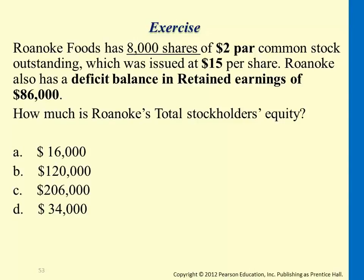Here it tells you that there are 8,000 shares of $2 par value common stock, and the original issue price for the stock is $15. Now, it tells you there's a deficit balance of retained earnings. A deficit balance is a negative balance of retained earnings.